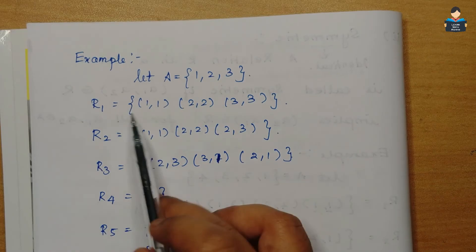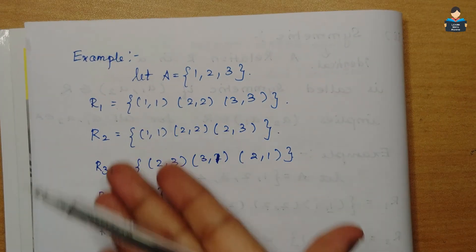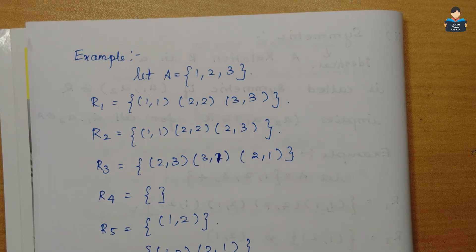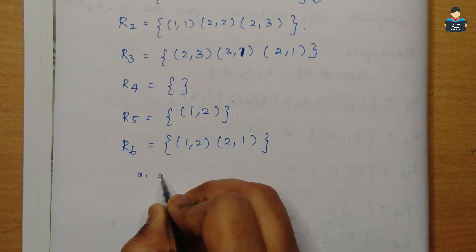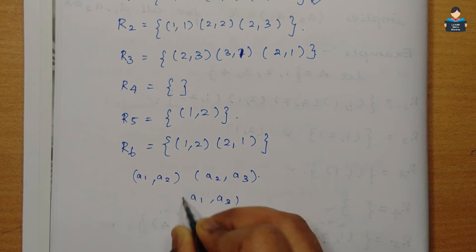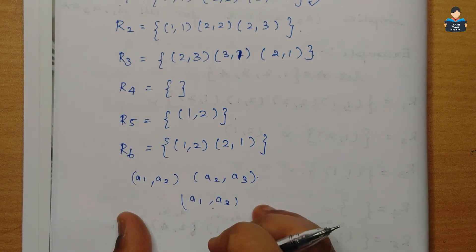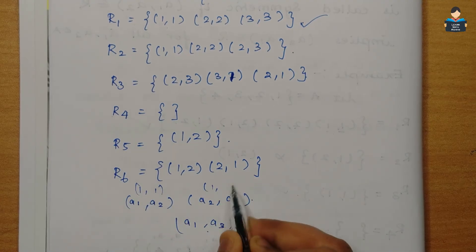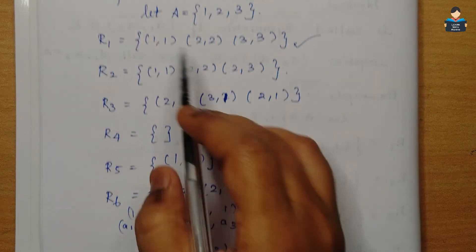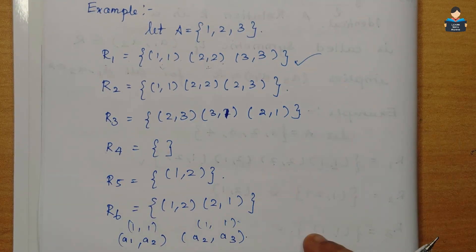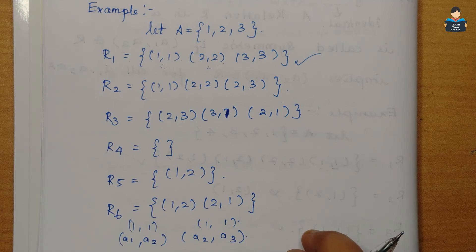If the condition a1,a2 in R and a2,a3 in R implies a1,a3 in R is satisfied, we say the relation is transitive. For example, in the relation {(1,1),(2,2),(1,3),(3,3)}, the transitive condition is satisfied, so it is transitive. We use reflexive, symmetric, and transitive conditions together.